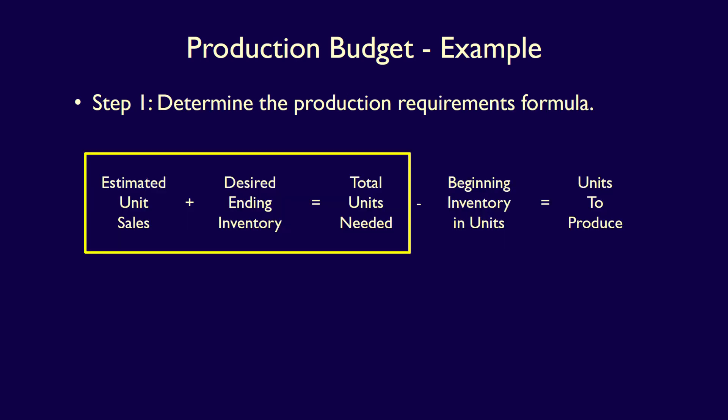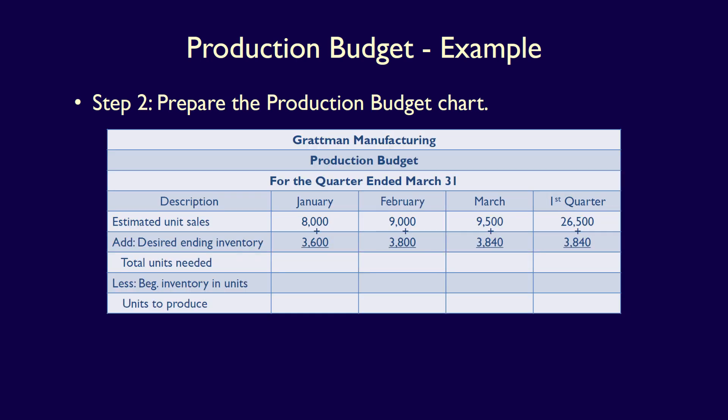We now add the estimated unit sales and the desired ending inventory to obtain the total units needed for each month and the first quarter. For January: 8,000 plus 3,600 equals 11,600 units needed. For February: 9,000 plus 3,800 equals 12,800 units needed. For March: 9,500 plus 3,840 equals 13,340 units needed. For the first quarter: 26,500 plus 3,840 equals 30,340 units needed.